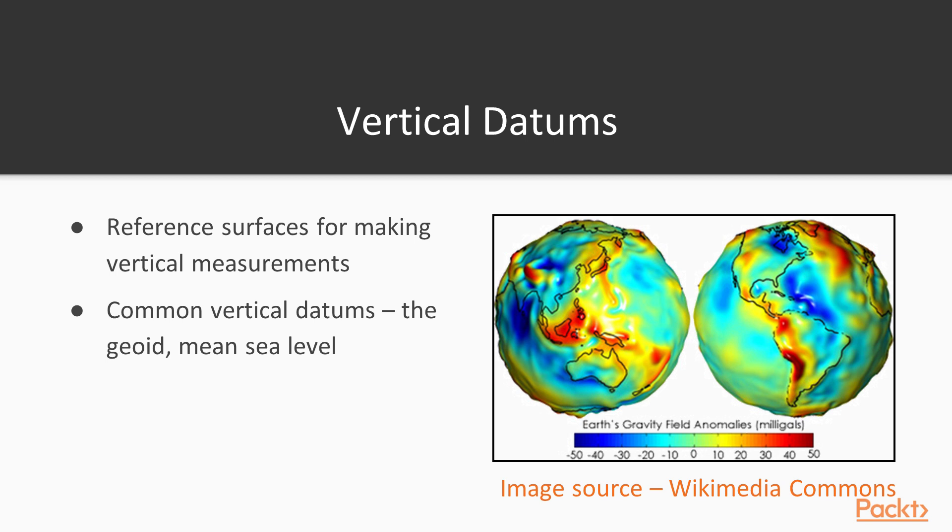In GIS, we work commonly with horizontal datums, which are horizontal reference surfaces that allow us to make X and Y positional measurements. For Z coordinates, the reference surface is a little bit different.